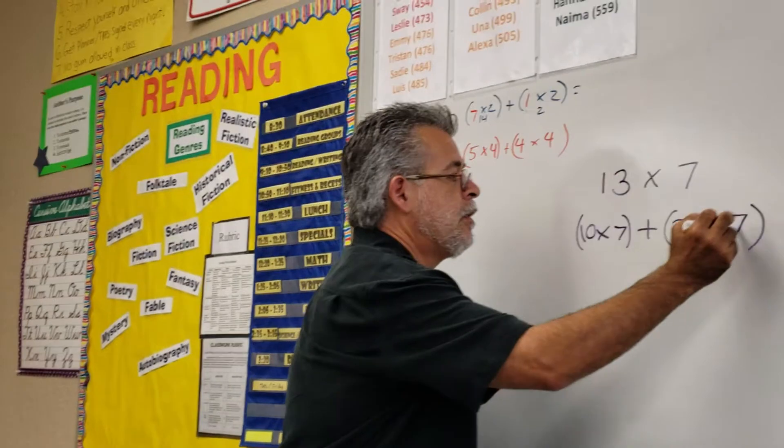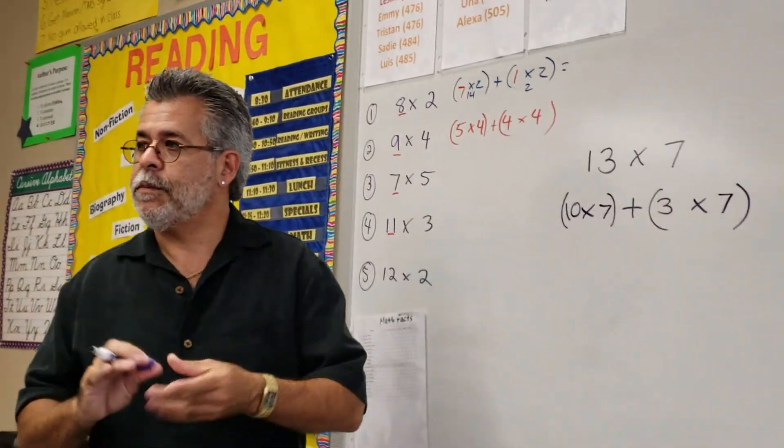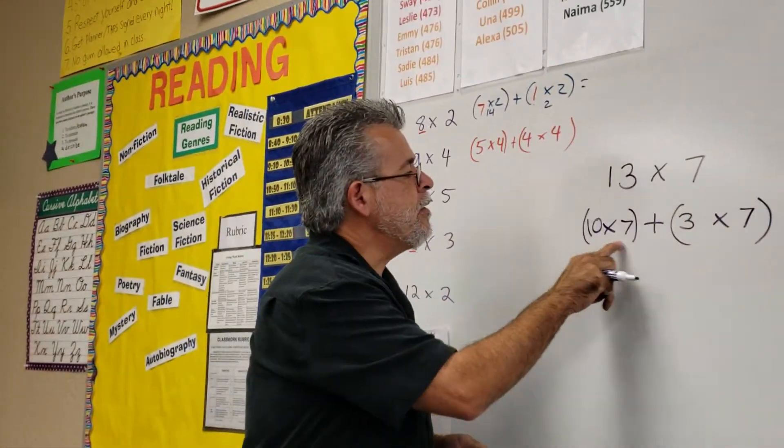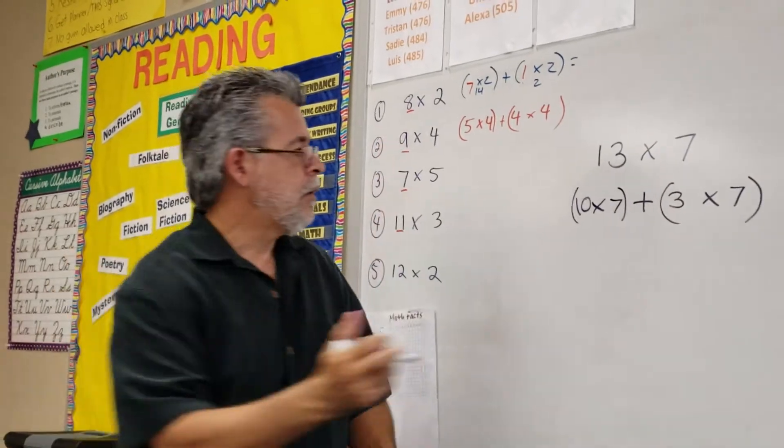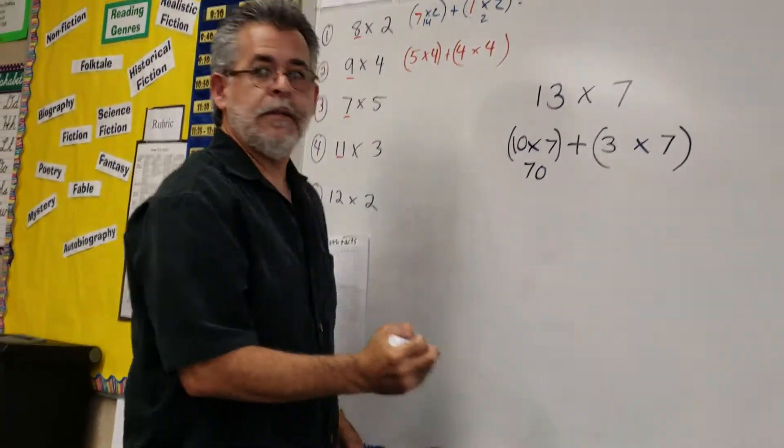Then the 7 stays. This makes it easier to multiply quicker. So what is 10 times 7? 70. What is 3 times 7? 21.